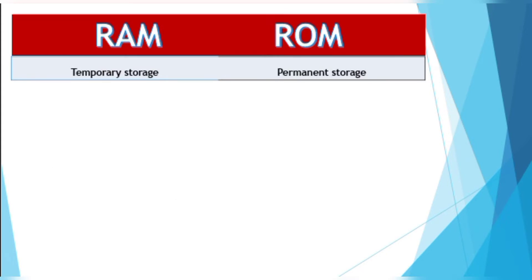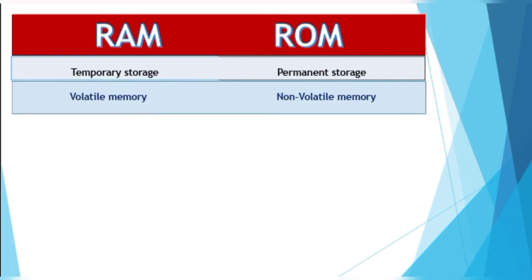In RAM we can store data temporarily, and in ROM we can store it permanently. It is difficult to edit data in ROM. RAM is a volatile memory and ROM is a non-volatile memory.